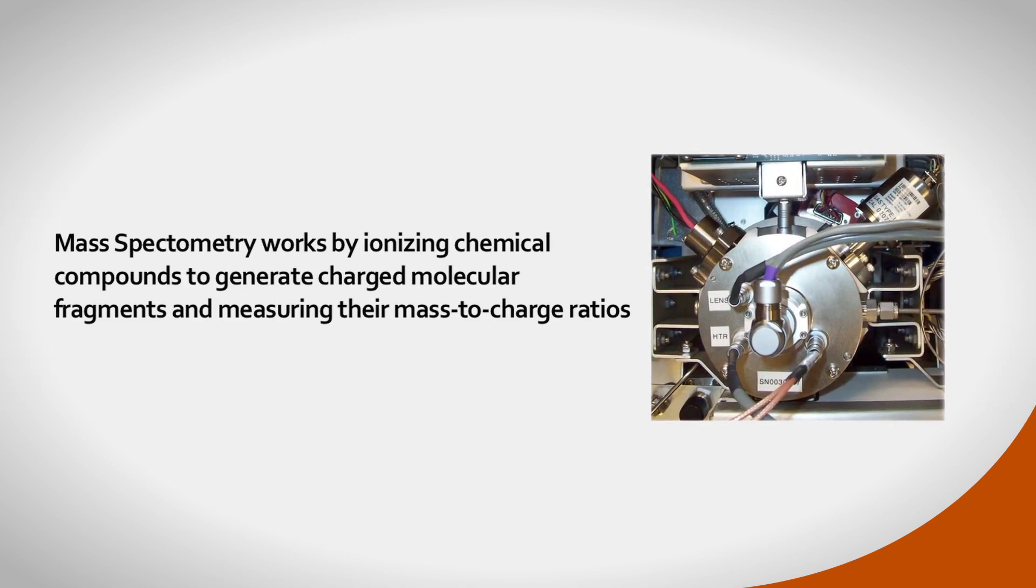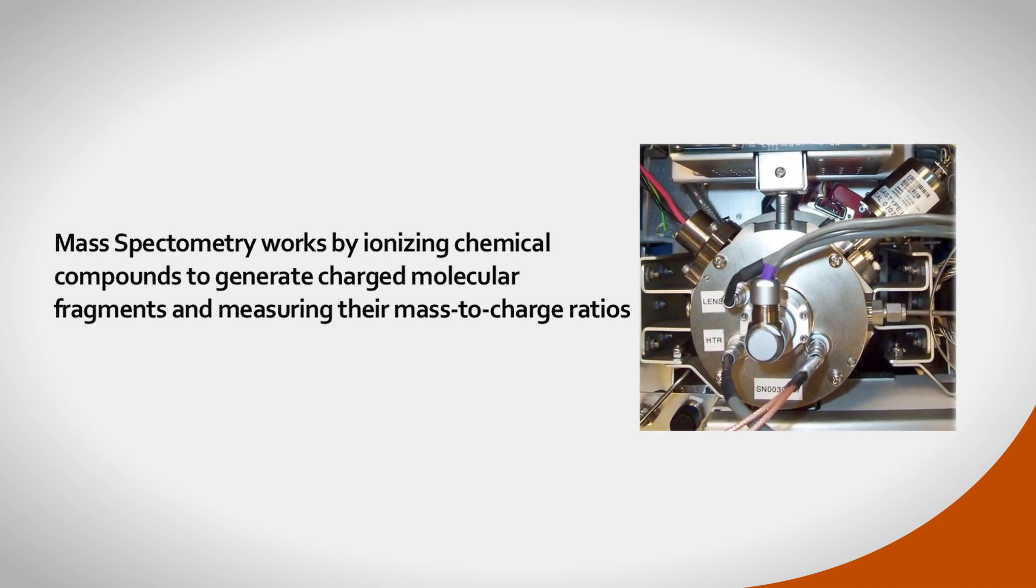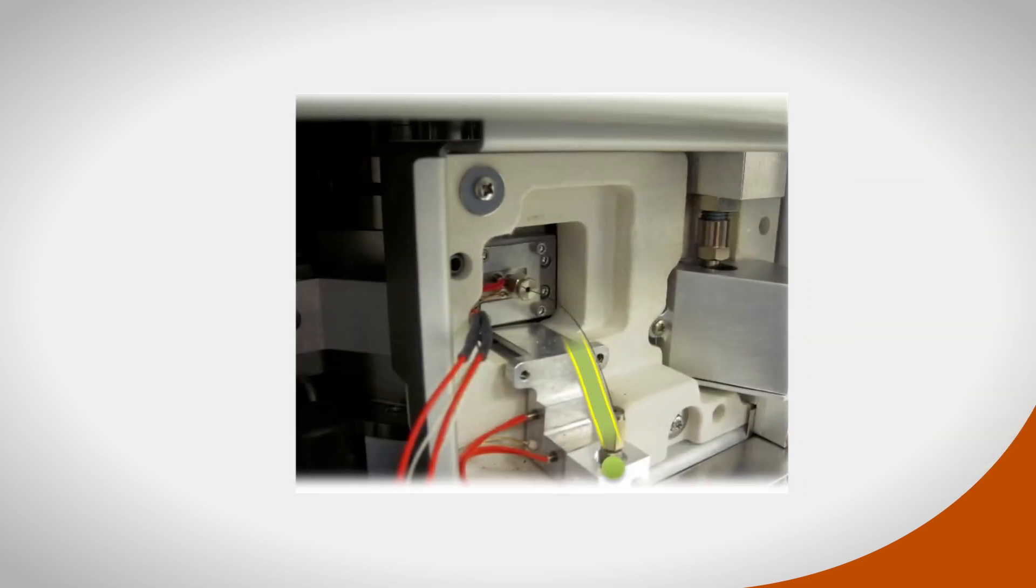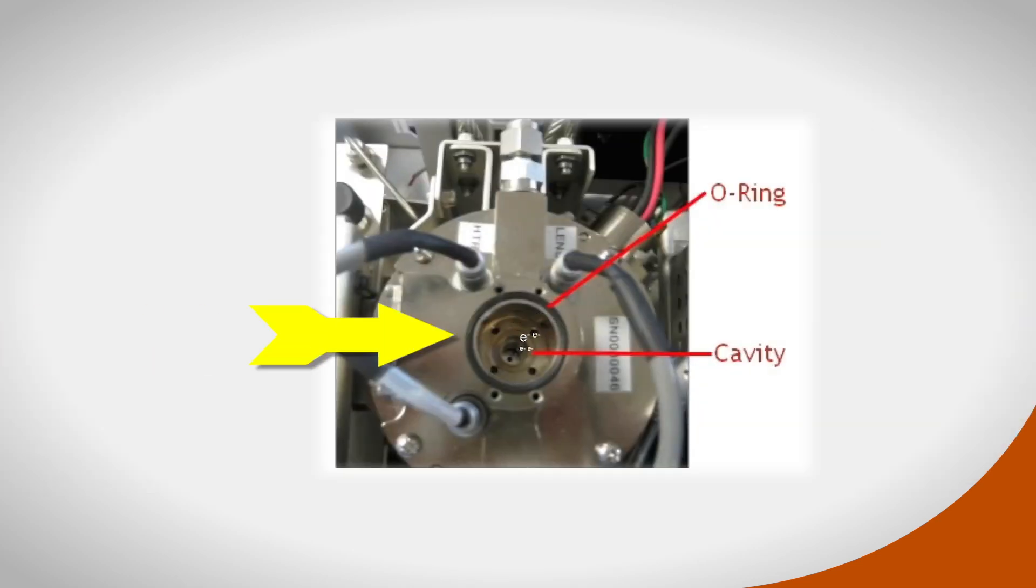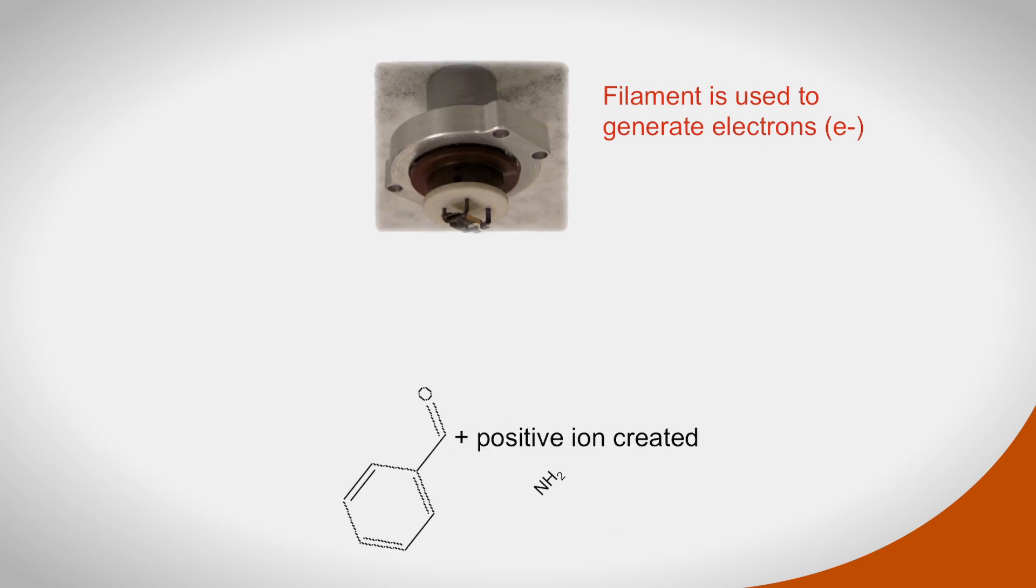MS works by ionizing chemical compounds to generate charged molecular fragments and measuring their mass-to-charge ratios. After passing through the GC column, the molecules are blasted with electrons at 70 electron volts, which cause them to break into unique fragments that turn into positively charged particles called cations.